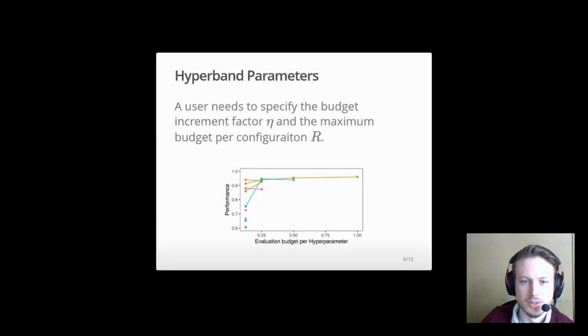Only two user-defined parameters are required for hyperband. The budget increment factor eta and the maximum budget per configuration R. Eta also acts as the dividend of the fraction of remaining configurations after each step.